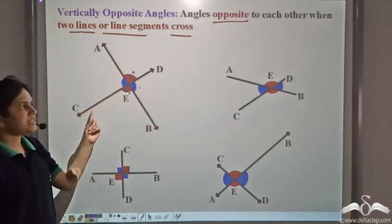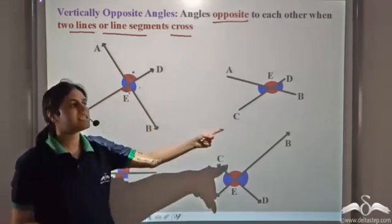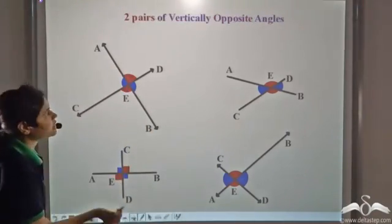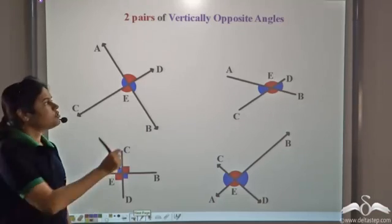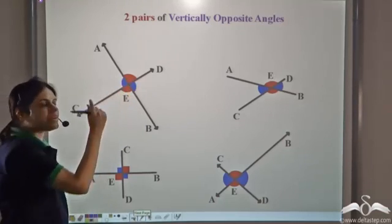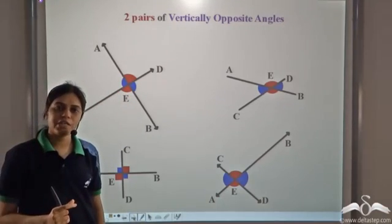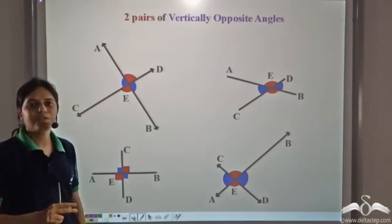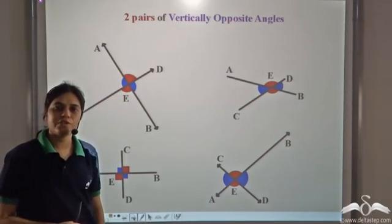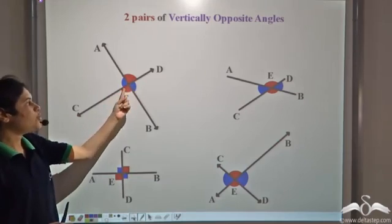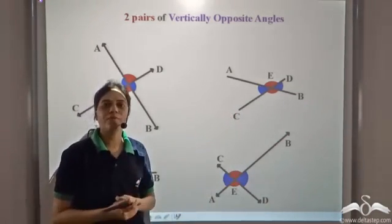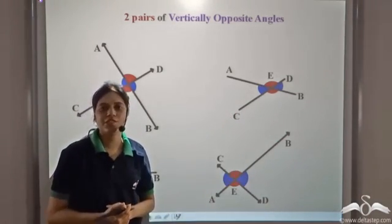When two lines or line segments cross, two pairs of vertically opposite angles are formed. So the red angles form a pair of vertically opposite angles and the blue angles form a pair of vertically opposite angles. So there are two pairs of vertically opposite angles formed in each case.